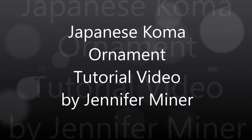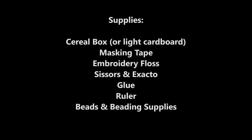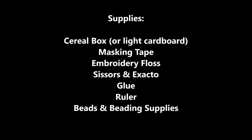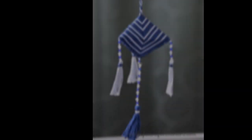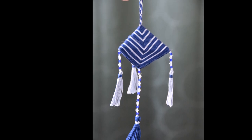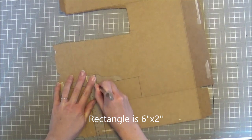Hi guys and welcome, this is Jennifer Miner. Today I'll be sharing with you the creation of a Koma or Japanese ornament. Our supplies are cereal box, masking tape, floss, scissors, ruler, glue, beads and beading supplies. This is an image of the ornament that we'll be making today. Let's get started.